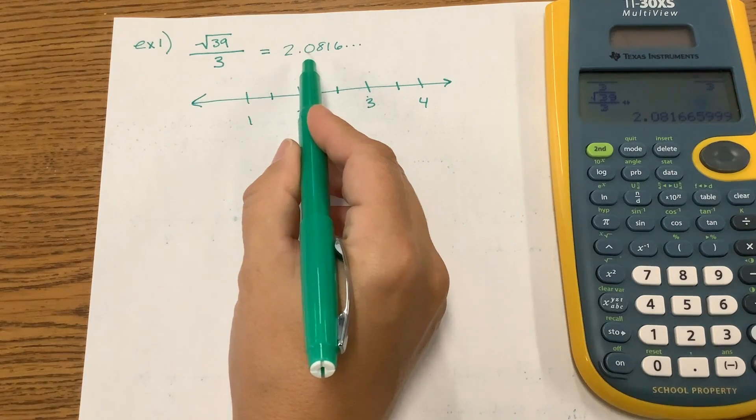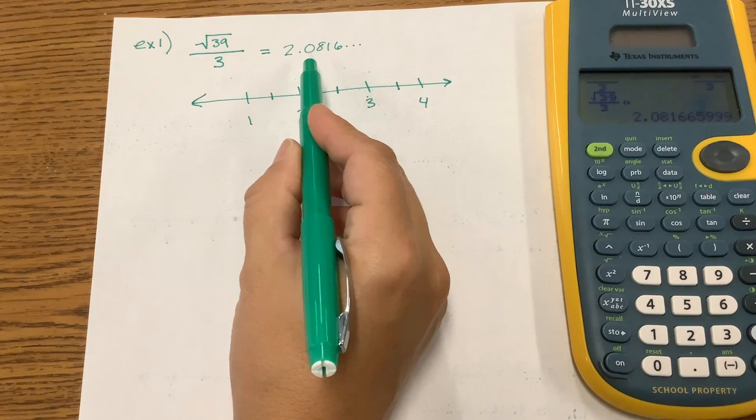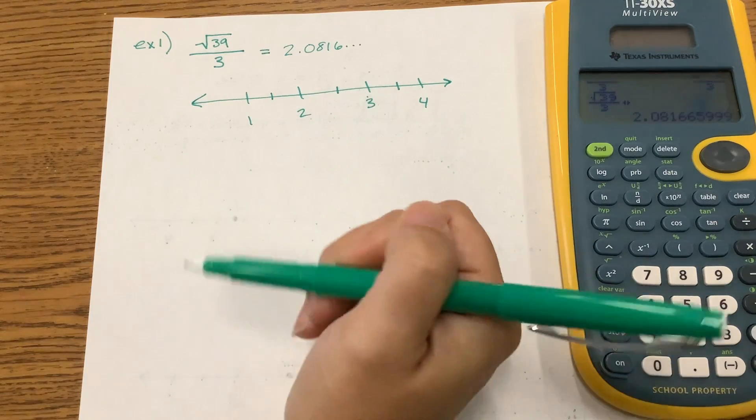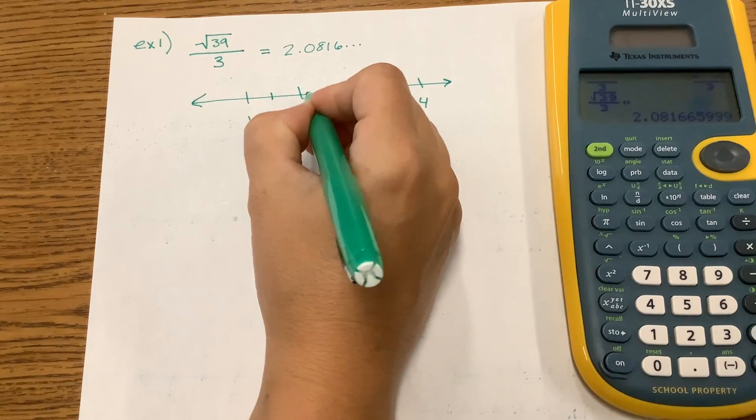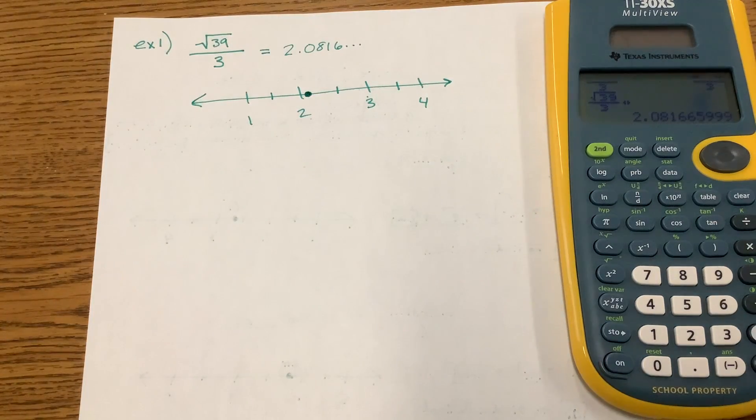But because it's a 0 in the tens place, is it closer to the 2 or closer to the 3? Closer to the 2. And so we're going to place it here just as an estimate.